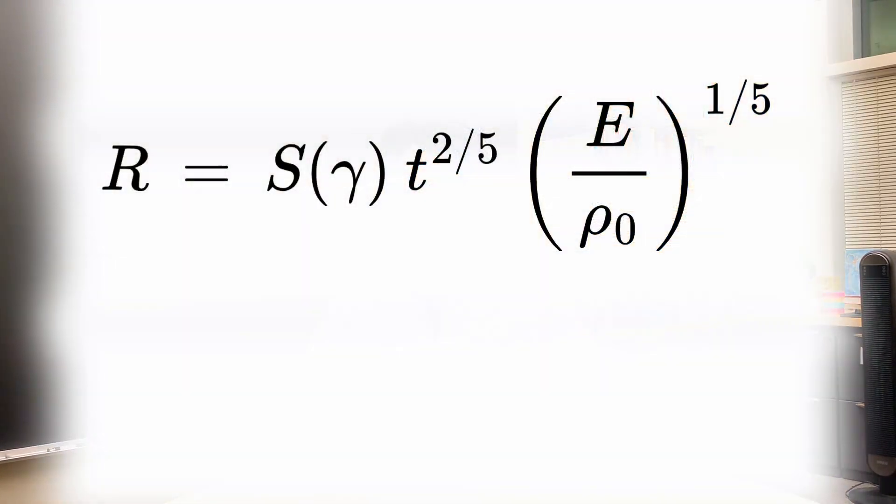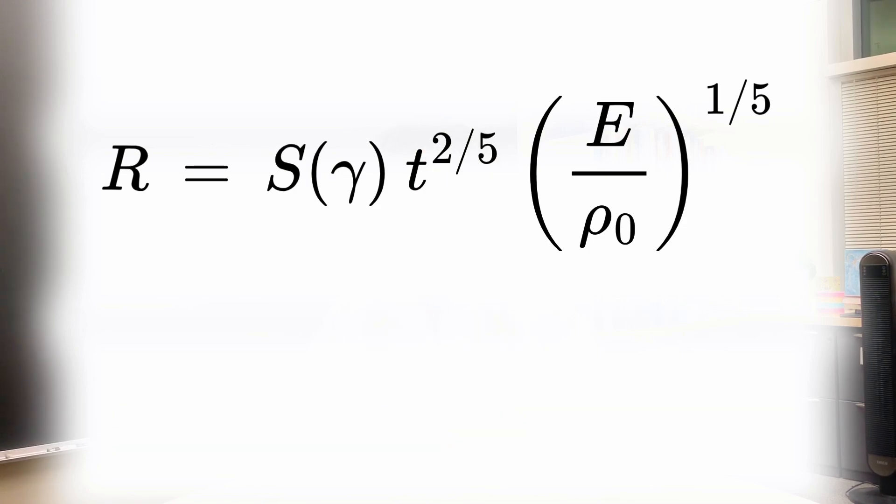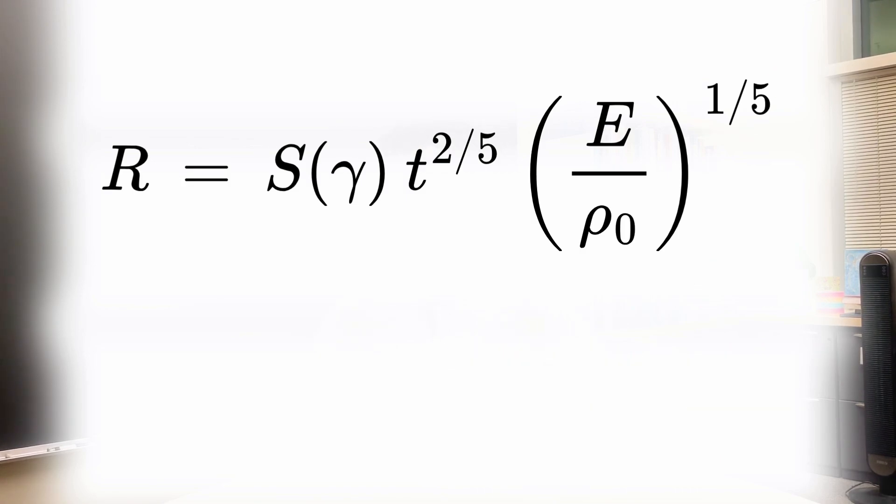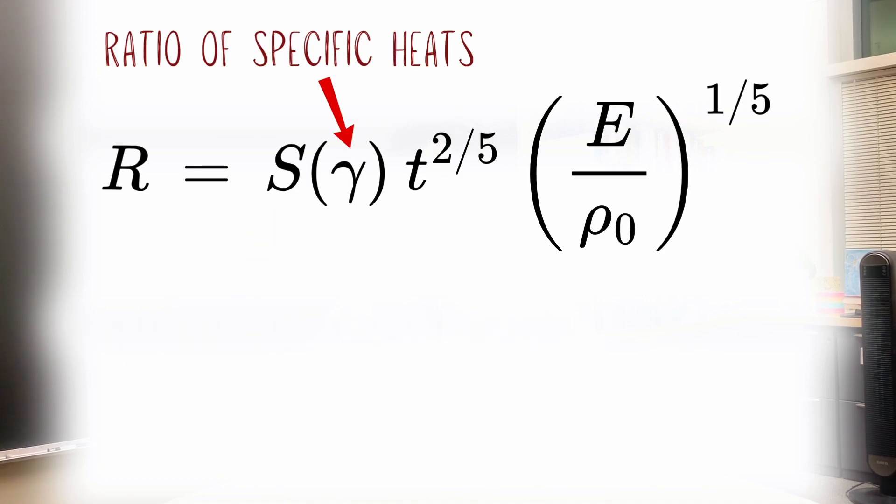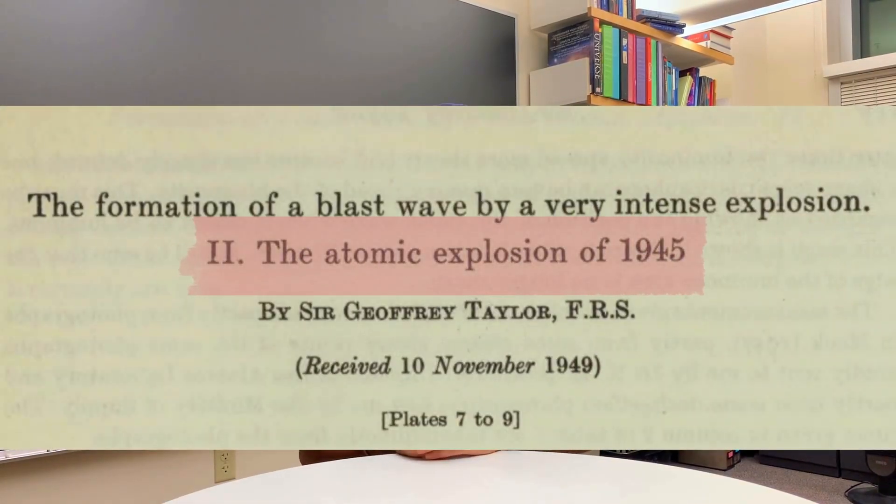He found this expression where the radius r was a power law in time with an exponent of two-fifths. Notice also that this radius depends on the ratio of the energy to the density of the undisturbed air to a power of one-fifth. The proportionality constant s depends on other parameters, particularly the ratio of specific heat of the gases in the air. In 1950, in the second part of his paper, Taylor used images of the early moments of the blast.